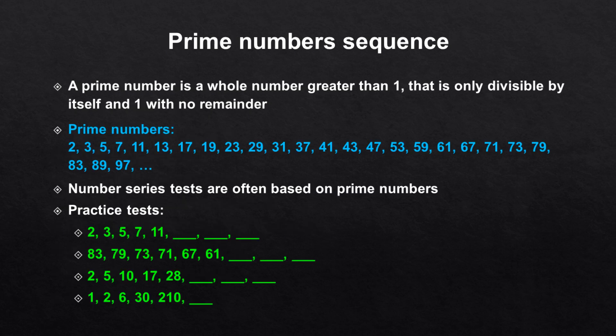So we start with the prime numbers sequence. A prime number is a whole number greater than 1 that is only divisible by itself and 1 with no remainder. For example, 5 is a prime number because 5 is only divisible by 1 and by 5 itself. In contrast, 6 is not a prime number because 6 can also be divided by 2 and by 3. This list contains all prime numbers up to 100. Number series tasks are very often based on these prime numbers.